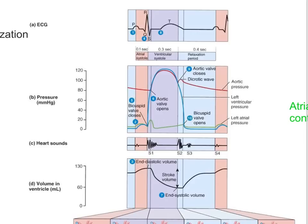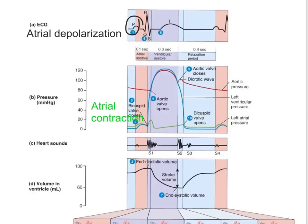Now let's take a look at what's going on during this phase. On the ECG, what we have is the P wave, remembering that the P wave represents atrial depolarization. It's the electrical event caused by the SA node firing — those autorhythmic cells — and then that electrical activity spreading through the conduction pathway over the atria. An electrical event then leads to a mechanical event: atrial contraction.